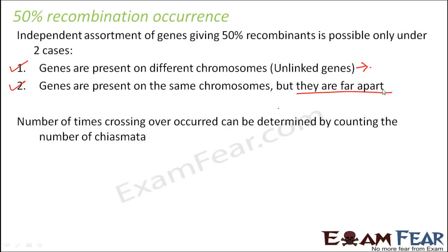How do we know how many times crossing over has taken place? That can be determined cytologically by counting the number of chiasmata, because every time a chiasmata formation takes place, there is a crossing over. Chiasmata is the X-shaped structure through which physical exchange takes place between the two non-sister chromatids. With this discussion, we reach another concept of complete and incomplete linkage. With complete linkage there will be no recombination, and with incomplete linkage the possibilities of recombinations keep on increasing.